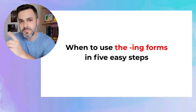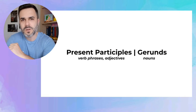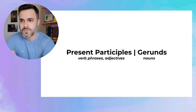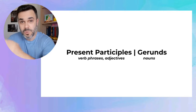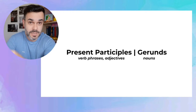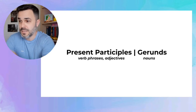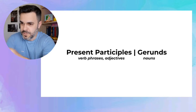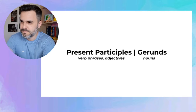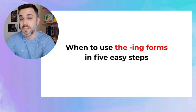But first, before we begin, here's something important. The ING forms are divided into two types: present participles and gerunds. A present participle is when the verb ending in ING is part of a verb phrase, or when it functions as an adjective. A gerund is when the ING verb functions as a noun. Now, back to when to use the ING forms in five easy steps.